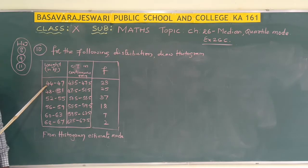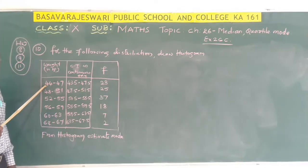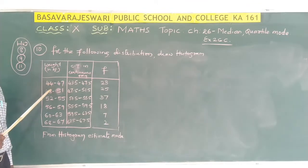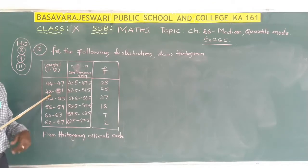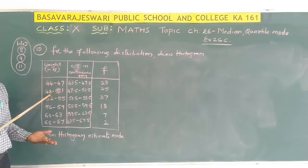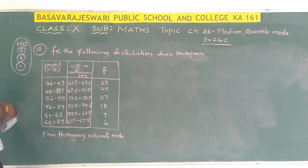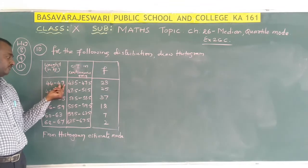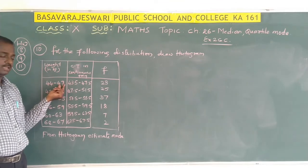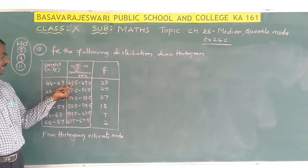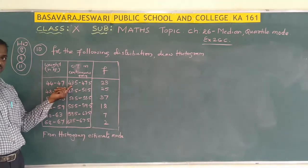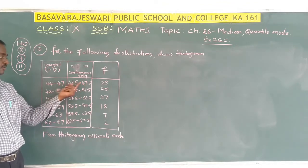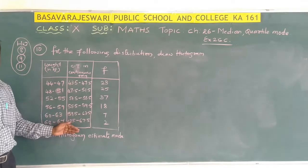Observe here — the class intervals are not given in continuous form, they are given in discontinuous form. In the previous classes I told you, if the class intervals are given in discontinuous form, how to convert them into continuous form by taking the adjustment factor of 0.5. So you have to subtract 0.5 from the lower limit and add 0.5 to the upper limit. So I have adjusted here — I subtracted 0.5 from the lower limit, giving 43.5, and added 0.5 to the upper limit, giving 47.5. First you have to write the adjusted class interval.